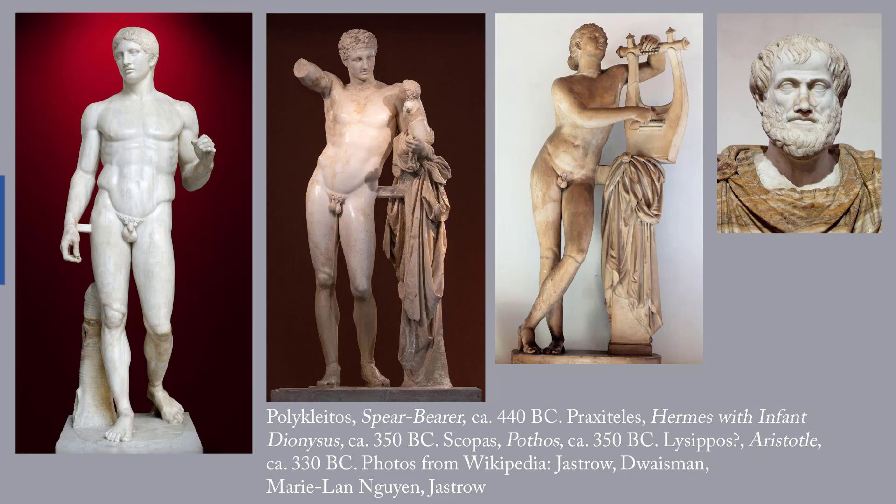Innovations during the Classical period: contrapposto is developed during the Early Classical period. It means that in a standing or walking figure, parts of the body shift to balance opposing forces — if you put your weight on one foot, the rest of your body adjusts to keep you balanced. The example is Polyclitus' Spear Bearer. Another innovation is figures that don't look like they were carved from a single upright block of stone — they turn on their axis, lean to one side, and enclose space by holding their arms in front of them. Hermes with infant Dionysus, second from the left, is an example of that.